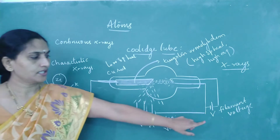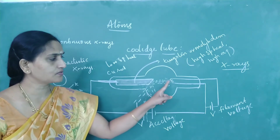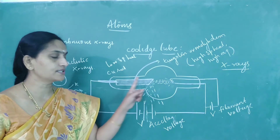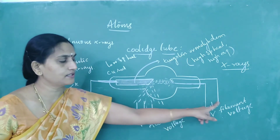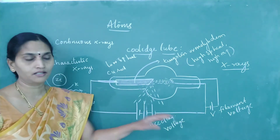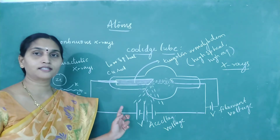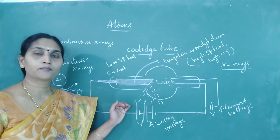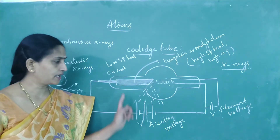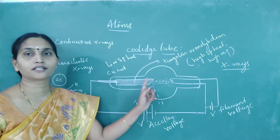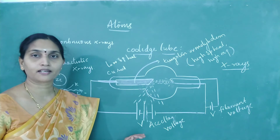Remember these two important points: if you increase the filament voltage, filament current increases, giving more electrons — more photons — so intensity of X-rays increases. If you want more energetic X-rays, increase the accelerating voltage connected to the target; this gives more energetic electrons and hence more energetic X-rays. These two points are important for objective pattern questions.